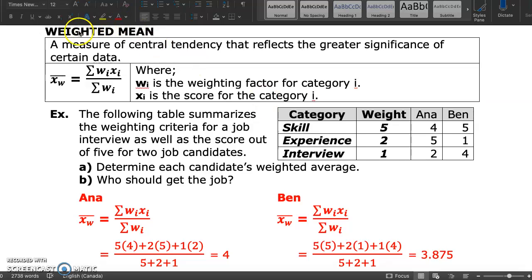Let's make it more interesting with weighted mean. It's a measure of central tendency that reflects the greater significance of certain data. The formula for weighted mean, X bar, is the sum of the product between the weight of a particular value and the actual value itself, divided by the sum of the weight of the values.